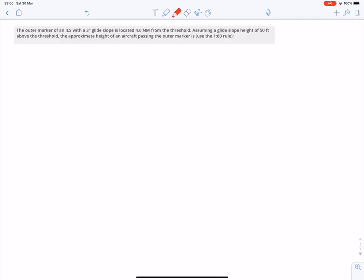Here we have a question that says an automarker with an ILS with a three-degree glide slope is located 4.6 nautical miles from the threshold. Assuming that a glide slope height of 50 feet above the threshold, the approximate height of the aircraft passing the automarker.